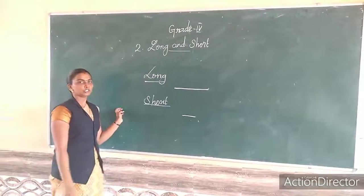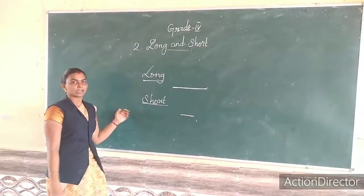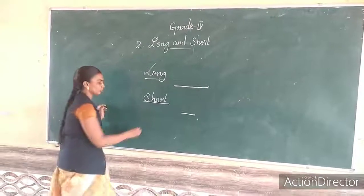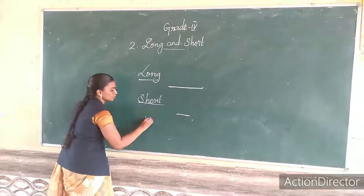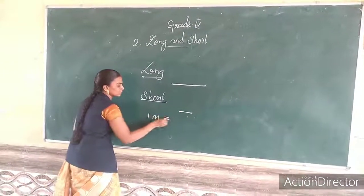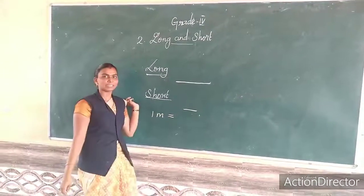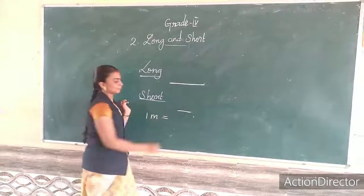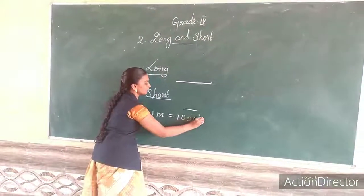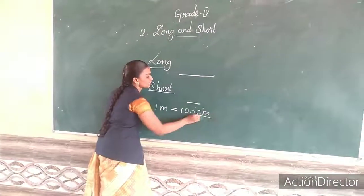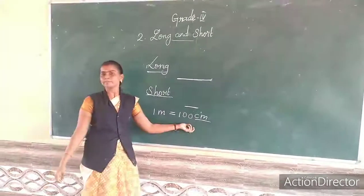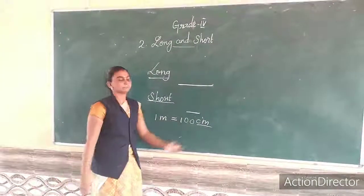Now I am going to write two measurement points. One meter is equal to how many centimeters? Hundred centimeters. CM is the short term of centimeter.